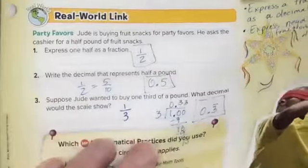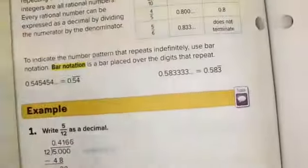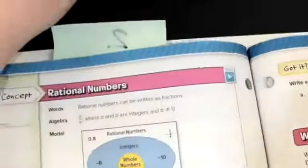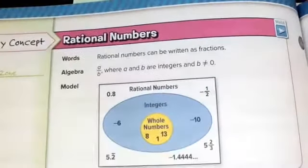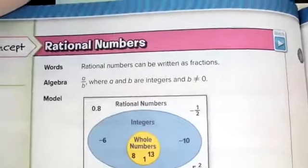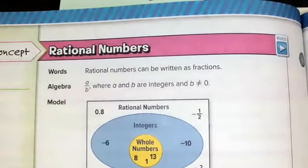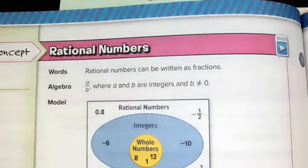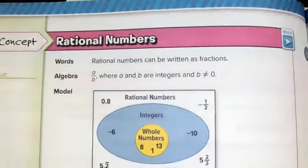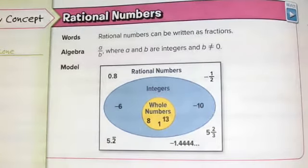Let's head over to page 380. We have a really nice diagram mapping out what rational numbers are at the top of page 380. Rational numbers are numbers that can be written as fractions, and here we have some examples and non-examples of rational numbers.